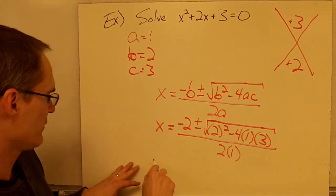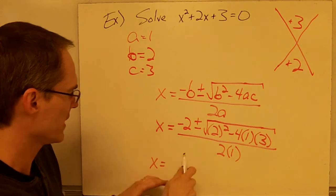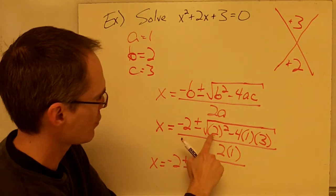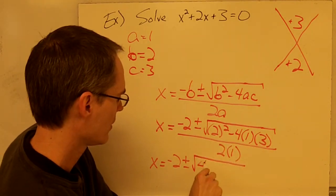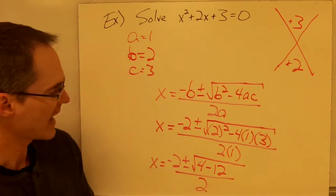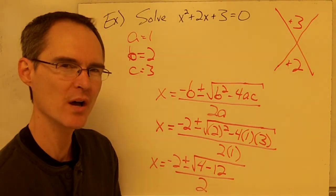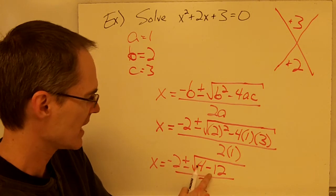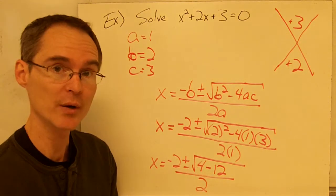Let's simplify this. I can simplify everything under the radical sign. So I have negative 2, plus or minus the square root of: 2 squared is 4, so that's 4 minus — 4 times 1 is 4, and 4 times 3 is 12 — so 4 minus 12, all divided by 2. I'm starting to see a problem because under the radical sign I've got 4 minus 12, which is a negative number. If I try to take the square root of negative 8, there is no real number that is the square root of negative 8.